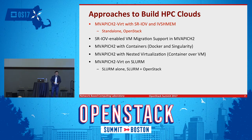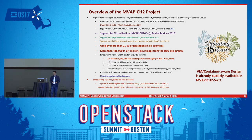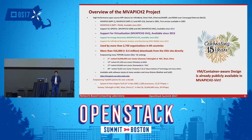Before going into detail, let me briefly introduce MVAPICH2. MVAPICH2 is an open source MPI library running on top of InfiniBand, OmniPath, Ethernet, iWarp, and RoCE networks. It has been in the community for more than 15 years. We support MPI, MPI plus OpenMP, MPI plus GPU Direct RDMA, cloud, and energy-aware MPI. This library is used by almost 3,000 organizations across the world, and the number one supercomputer in the world uses our library.